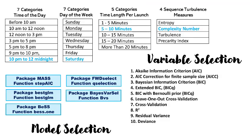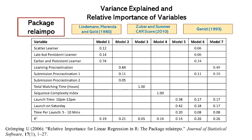Inferential analyses are carried out following a systematic procedure of variable and model selection. The variables 10 to 12 midnight, Saturday launching, 5 to 10 minutes per launch, and sequence turbulence are selected to include in the final models. Five model selection packages are used for model selection using 10 selection methods from the listed packages and functions. The package relaimpo is used to generate the relative importance of the variables.